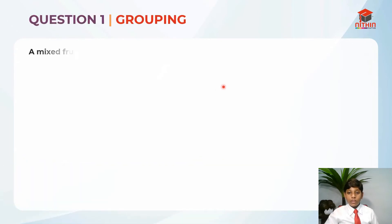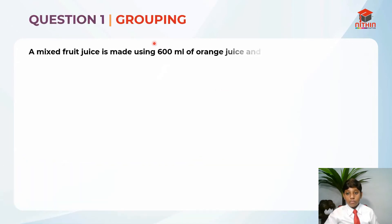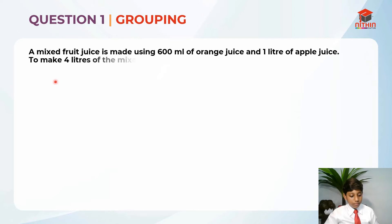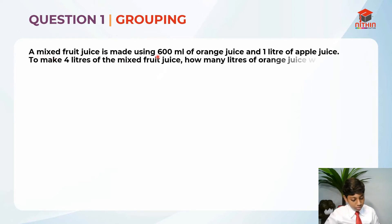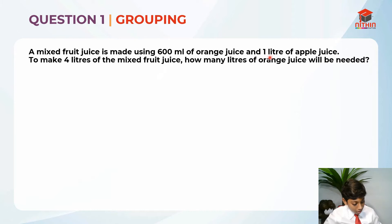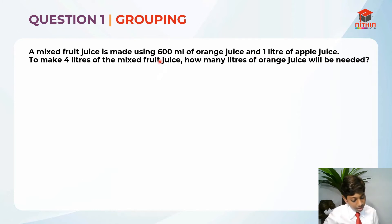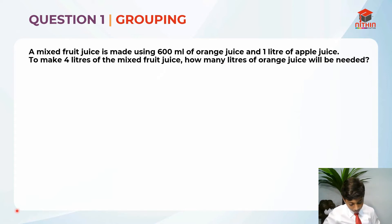Question 1. This question is testing us on the concept of grouping. Let's read the question first. A mixed fruit juice is made using 600 ml of orange juice and 1 liter of apple juice. To make 4 liters of mixed fruit juice, how many liters of orange juice will be needed?